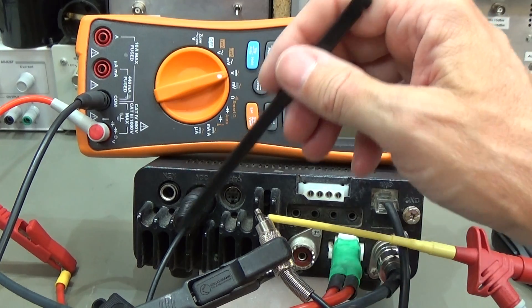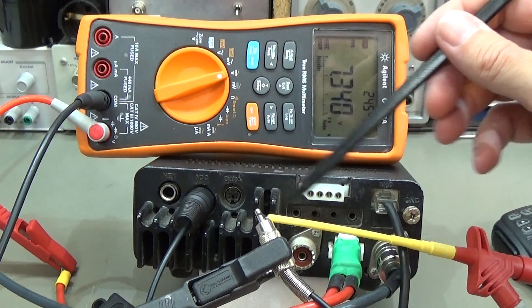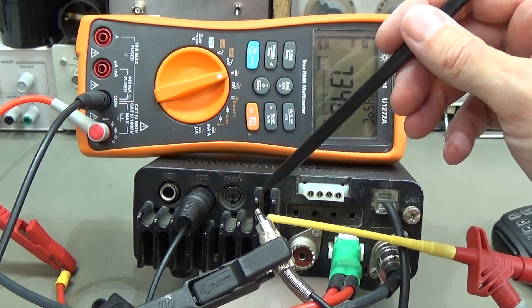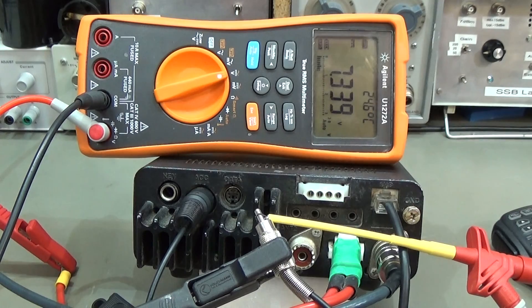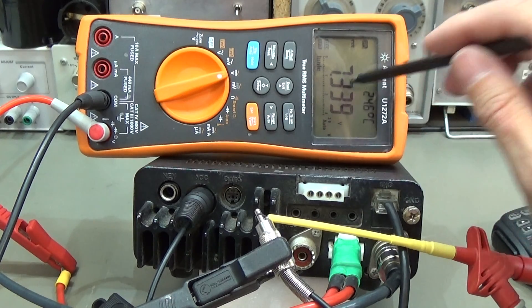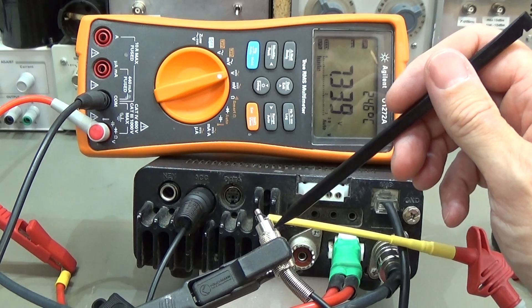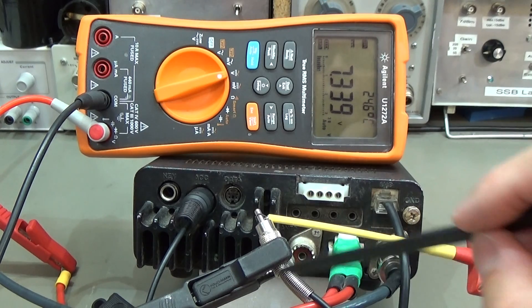Now we have here the configuration with this wiring, and I've connected here our voltage meter again to this connector. You see again we read our 7.3 volts, and I have here connected the outer side of this connector to ground.